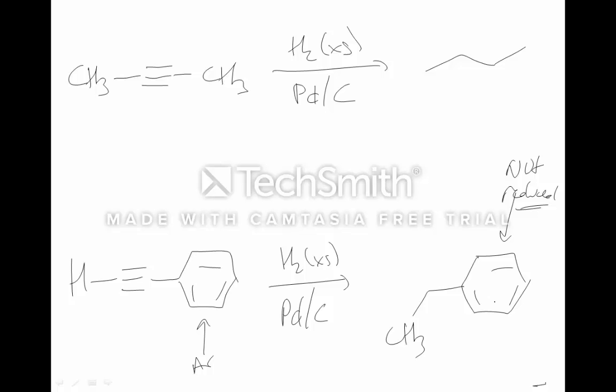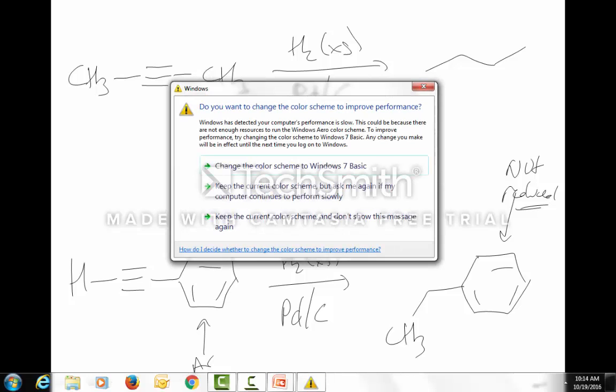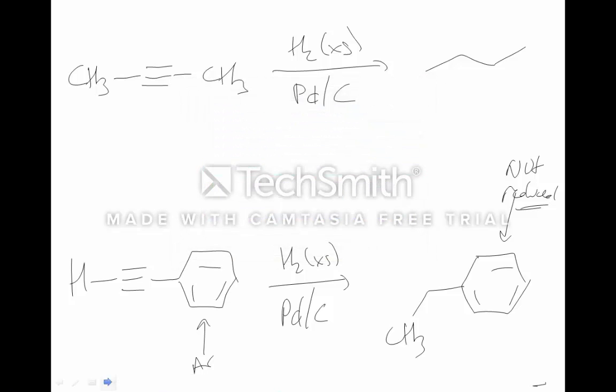H2 will always be excess, but how do we stop at the alkene? There is a way to do it. You've got to add a special catalyst.